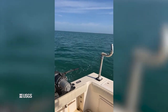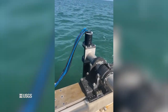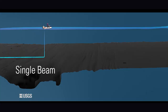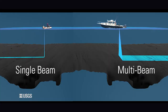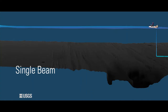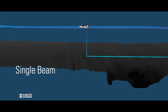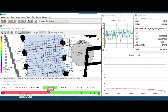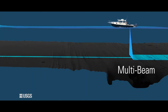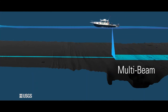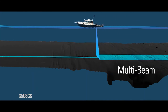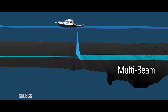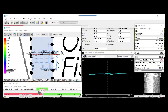Scientists at the U.S. Geological Survey St. Petersburg Coastal Marine Science Center primarily use two types of sonar transducers: single beam echo sounders and multi-beam echo sounders. A single beam transducer repeatedly emits a single pulse of sound directly beneath the vessel, providing a single depth measurement along the traveled track line. A multi-beam transducer repeatedly emits hundreds of pulses of sound in a fan-like fashion beneath the vessel, providing a large swath of depth measurements perpendicular to the vessel's track.